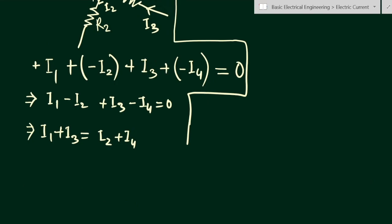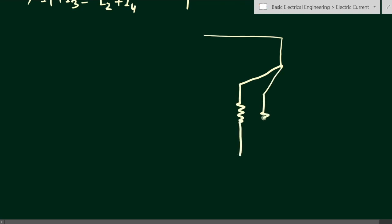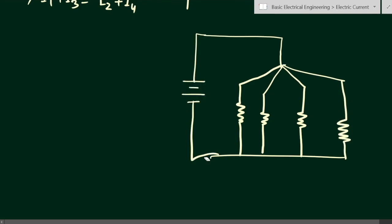Now let us consider some more complicated examples. Suppose we have a practical circuit with four branches meeting at a node. This voltage source of capital V has a positive and negative terminal, and a current capital I flows from it and enters the junction point, where it divides into four branches.